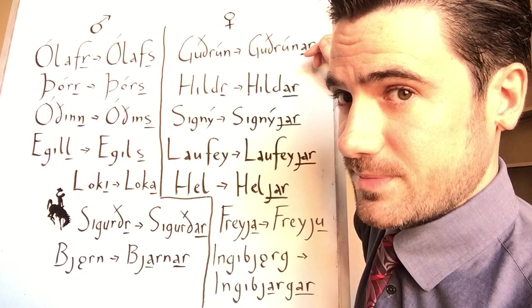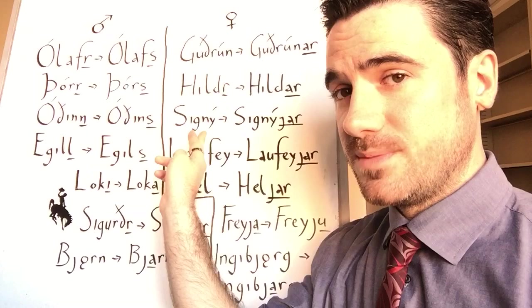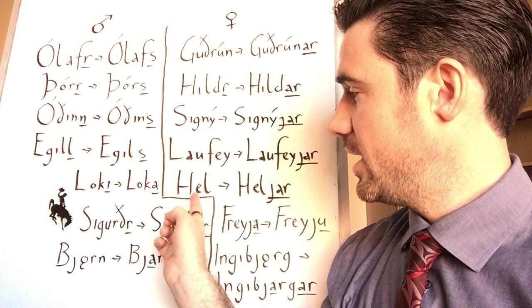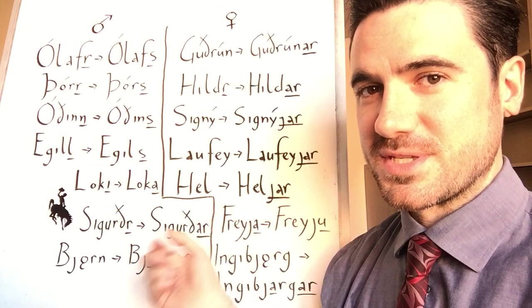A lot of feminine names will add a J between the root of the name and the A-R possessive. This applies especially to names that end in I, so like Signy becomes Signyjar, not just Signyar. Laufey, Loki's mother, is Laufeyjar. And this also applies to other names in -ey. And Hel, sort of uniquely, also has that J. So the possessive of Hel is Heljar. So if someone was the son of Hel, he would be Heljar's son.